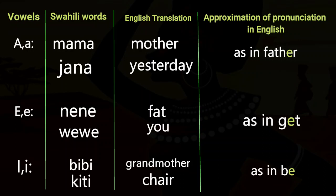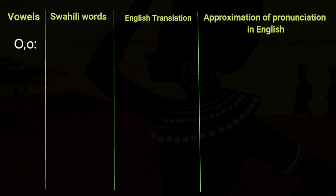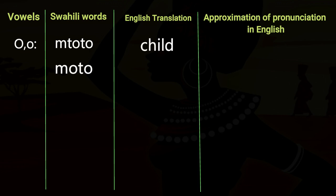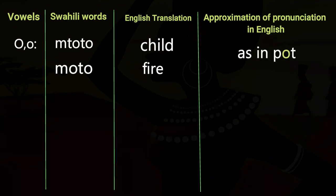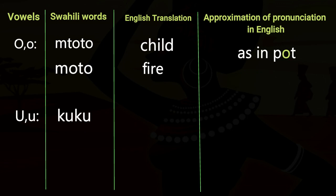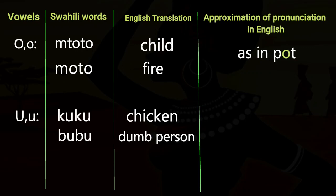The fourth vowel is O, in words like 'mtoto' meaning Child, and 'moto' meaning Fire — pronounced as in 'Pot'. And the last vowel is U, in words like 'kuku' meaning Chicken, and 'bubu' meaning a mute person — also approximated as in 'Pot'.